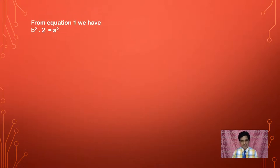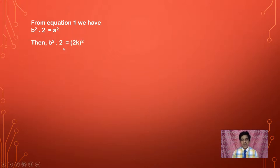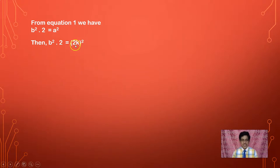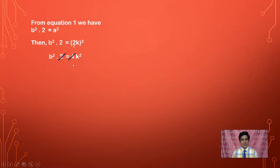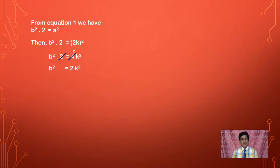From equation 1 we have B² × 2 = A². Since we found that A = 2K, we substitute 2K in place of A. So the left hand side remains B² × 2, and on the right hand side A square becomes (2K)². Squaring 2K gives 4K². So we have 2B² = 4K². Cancelling 2 from both sides gives B² = 2K².